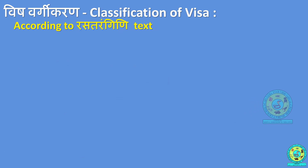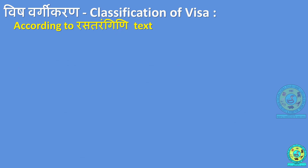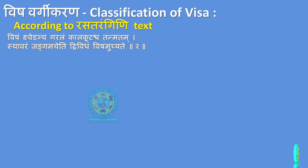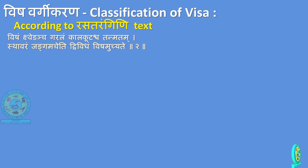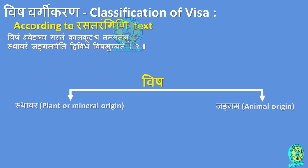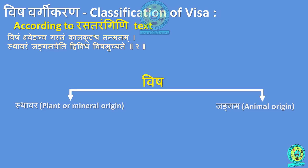According to Rasatarangini Chapter 24, Shloka 2: 'Visham Shwedancha Garalam Kalakootancha Tanmatham. Sthavaram Jangamaam Cheti Dvividam Visham Uccate.' Shweda, Garala, and Kalakuta are synonyms of Visham. Vishah is classified into Sthavara and Jangama.